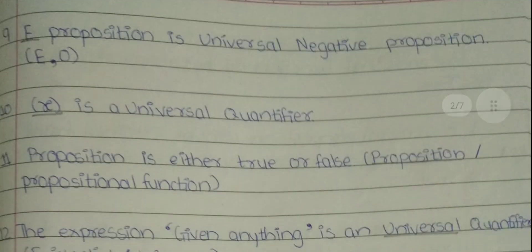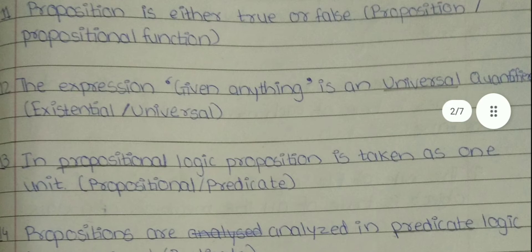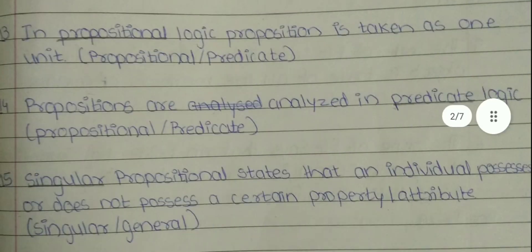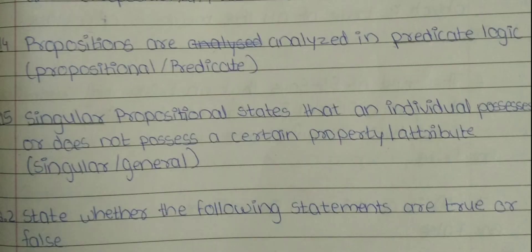10. Dash is a universal quantifier. The answer is X. 11. Dash is either true or false. The answer is proposition. 12. The expression 'given anything' is an dash quantifier. The answer is universal. 13. In dash logic, proposition is taken as one unit. The answer is propositional. 14. Propositions are analyzed in dash logic. The answer is predicate.